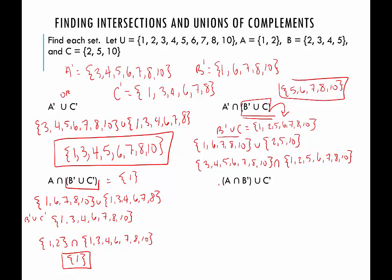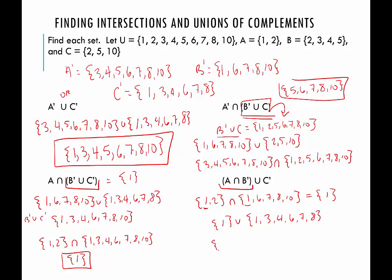How does that compare to the second one? Here we start inside the parentheses: A is 1 and 2, intersected with B complement which is 1, 6, 7, 8, 10 — they have a 1 in common, so that's 1. Now we union that 1 with C complement, which is 1, 3, 4, 6, 7, and 8, giving us 1, 3, 4, 6, 7, and 8 — which is just C complement. So the parentheses placement does change the result.